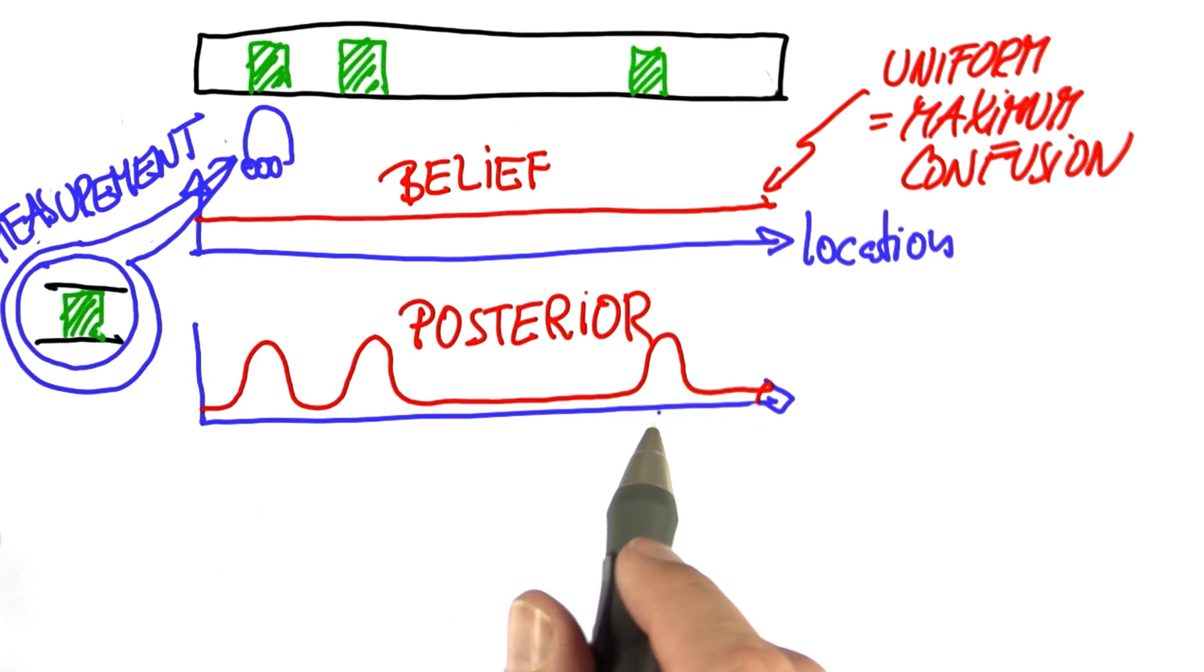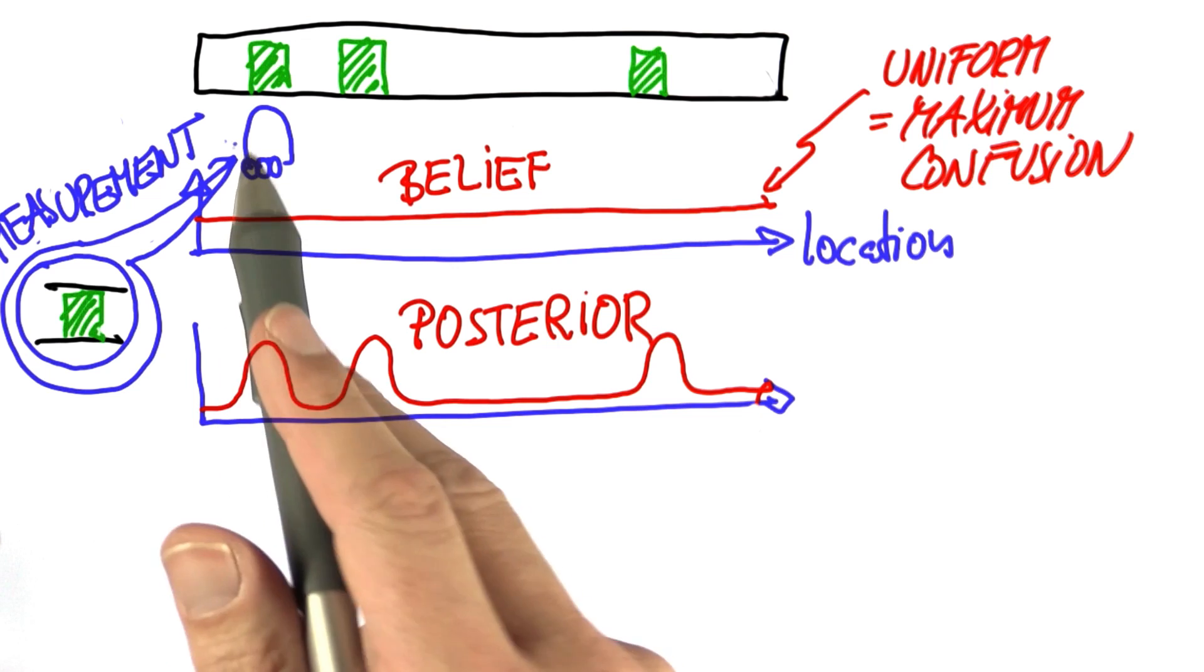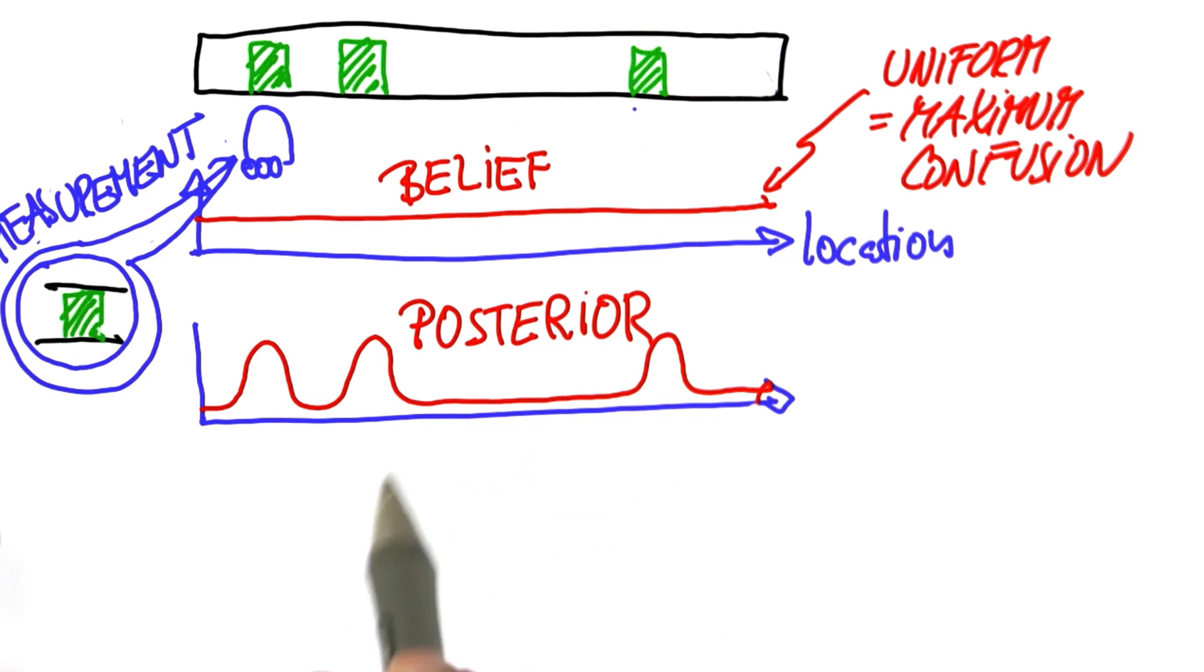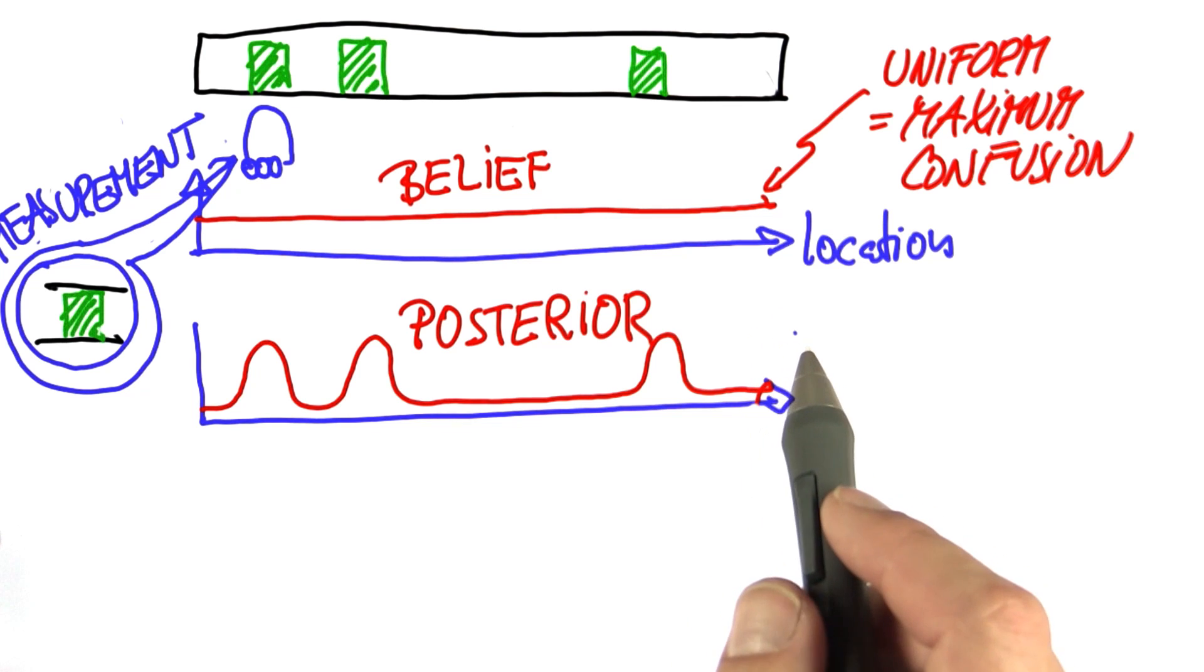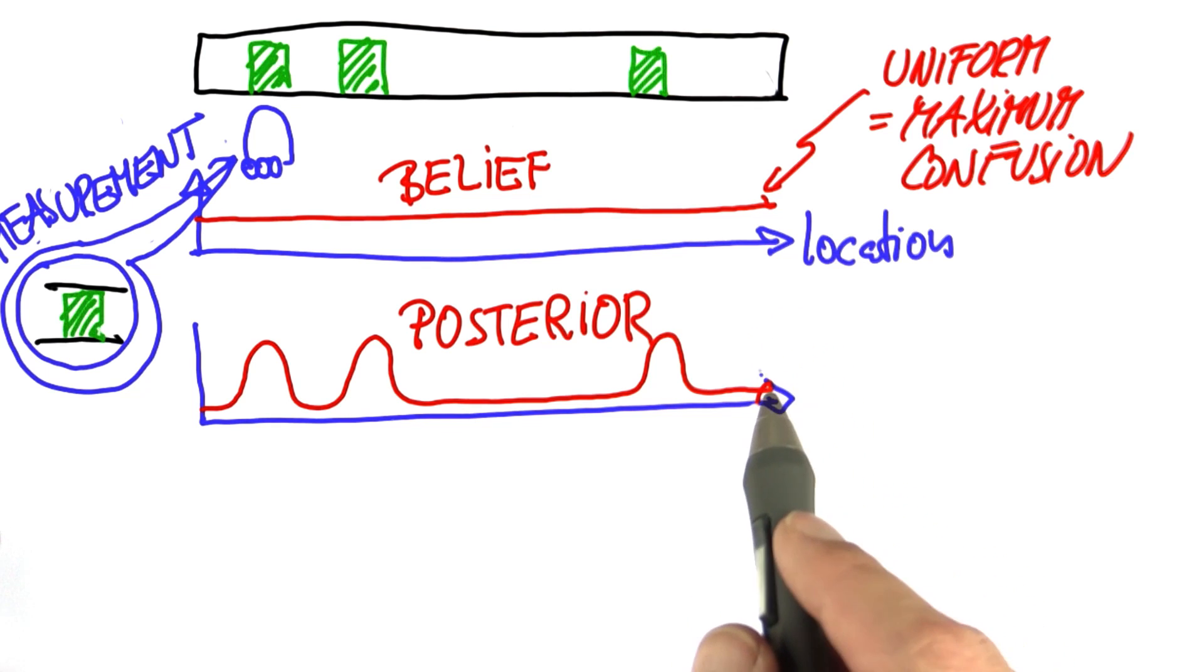Now, the key aspects of this belief is that we still don't know where we are. There's three possible door locations. And in fact, it might be that the sensors were erroneous, and we accidentally saw a door where there is none. So there's still a residual probability of being at these places over here. But these three bumps together really express our current best belief of where we are. This representation is absolutely core to probability and to mobile robot localization.